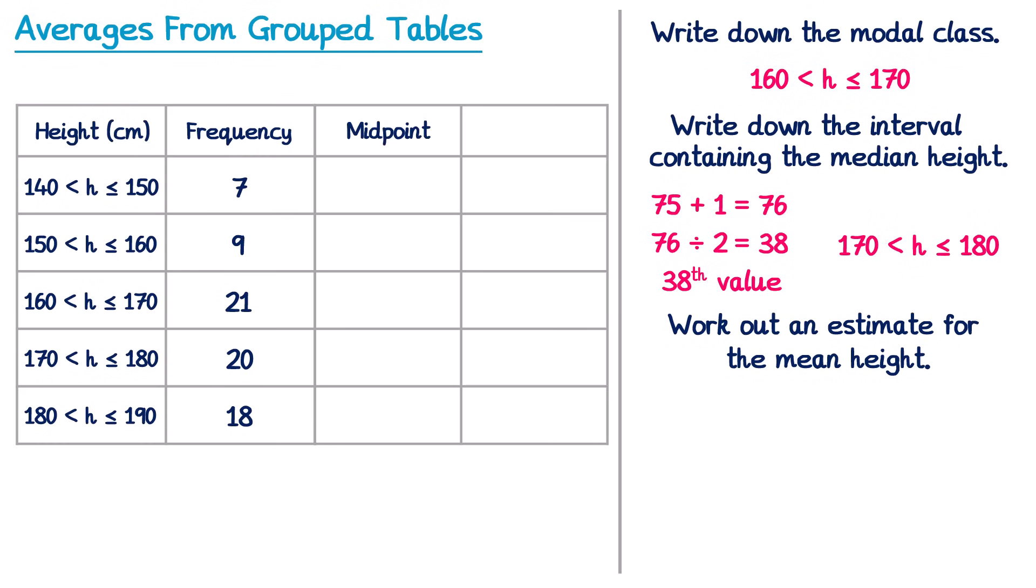So in this column we're going to write the midpoint of all of those intervals. So the 140 to 150 interval, the midpoint is 145. For the next one, 150 to 160, halfway in between those is 155, and then just carry on. 160 to 170 is 165, the next one is 175, and the final one is 185. So we're going to pretend that everyone in those intervals has the same height and that's the midpoint of those intervals.